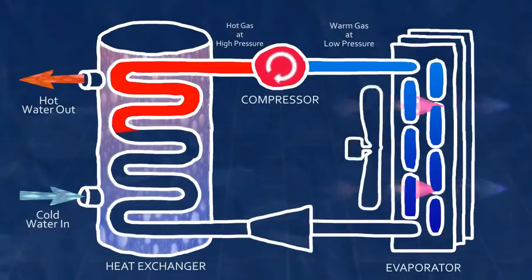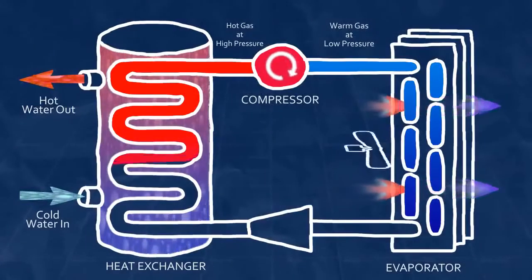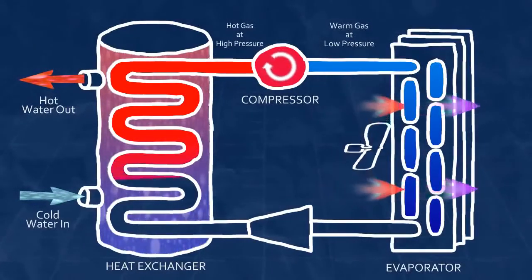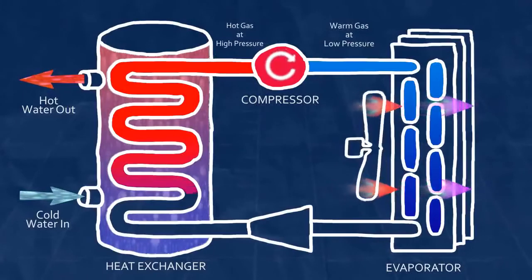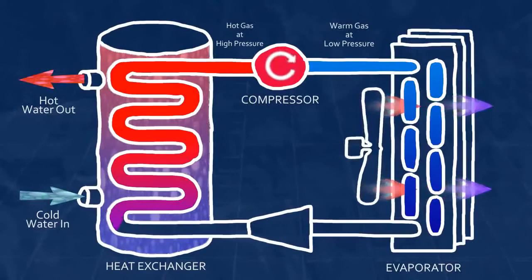As heat leaves the gas refrigerant, it cools off below its condensation point and changes from a gaseous state to a high-pressure liquid state. The change from gas to liquid facilitates the large transfer of heat energy to the water.